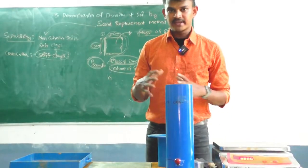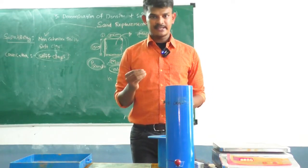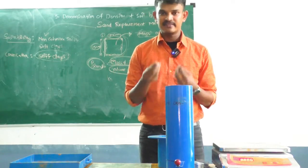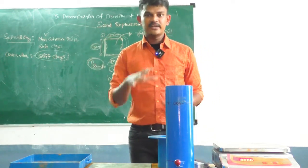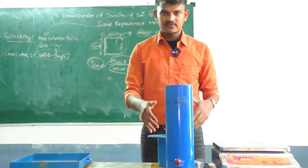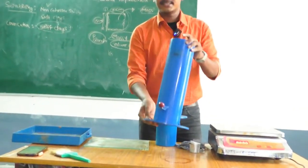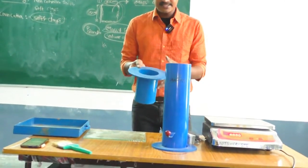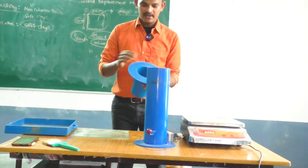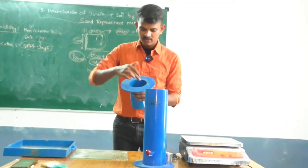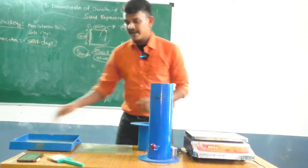In the sand replacement method, determining the density of sand is very important, since we use the sand to find the volume of the soil sample. The key apparatus is the sand pouring cylinder. We also have a cylindrical container into which the sand is poured. This container has a diameter of 10 centimeters and a height of 15 centimeters.